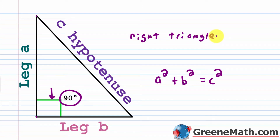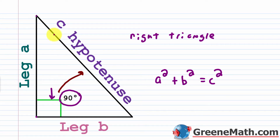With a right triangle you have two shorter sides known as legs — leg a and leg b. The longest side is always opposite the 90-degree angle. That side is labeled c and is known as the hypotenuse.